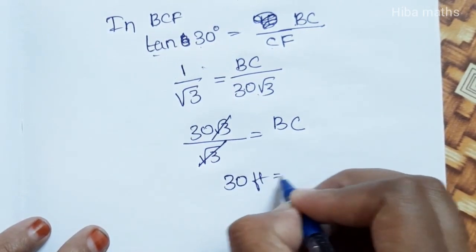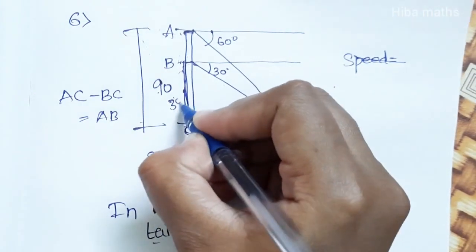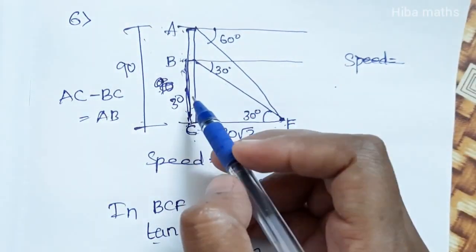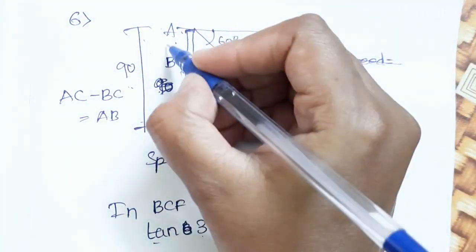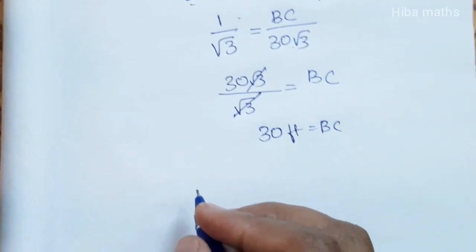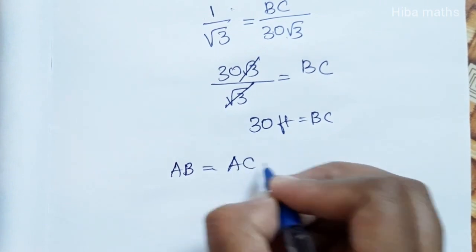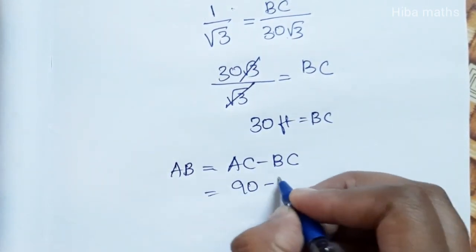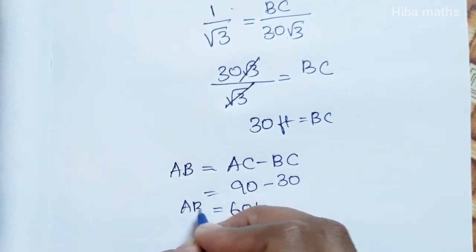The root 3 cancels, giving BC equals 30. Since the full height AC is 90 feet and BC is 30, we get AB equals AC minus BC, which is 90 minus 30, equal to 60 feet. This is the distance the lift has descended.